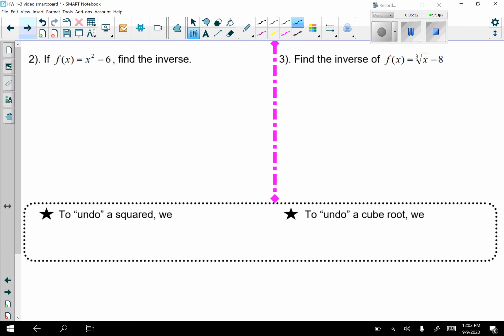Take a look at two more for tonight's homework. Number 2. If f(x) equals x squared minus 6, find the inverse. Step 1 and 2 are always the same. Rewrite as y equals. So I have y equals x squared minus 6. Switch x and y. x equals y squared minus 6. Now I'm going to solve. Add 6 on both sides.